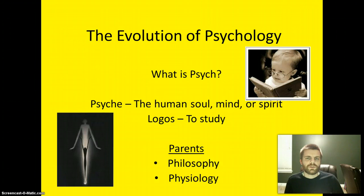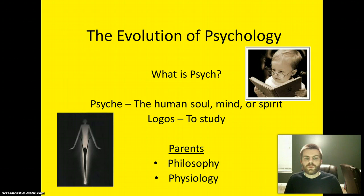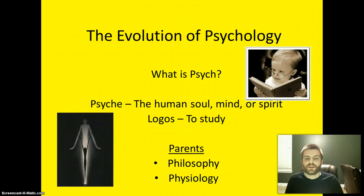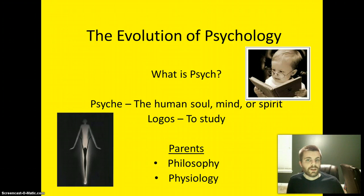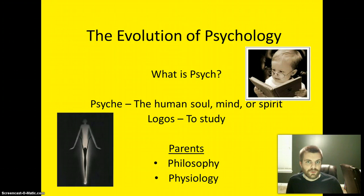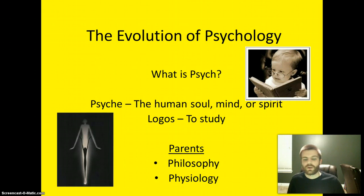Looking at the evolution of psychology — what is psychology, what does it mean? In terms of root words, 'psych' means the human soul, mind, or spirit in Greek, and 'logos' means to study. So combined, you literally get the study of the mind, the study of the soul, or the study of the spirit. In terms of where psychology actually comes from, it is a combination of philosophers in the 1800s asking questions about the mind and general philosophical thought.